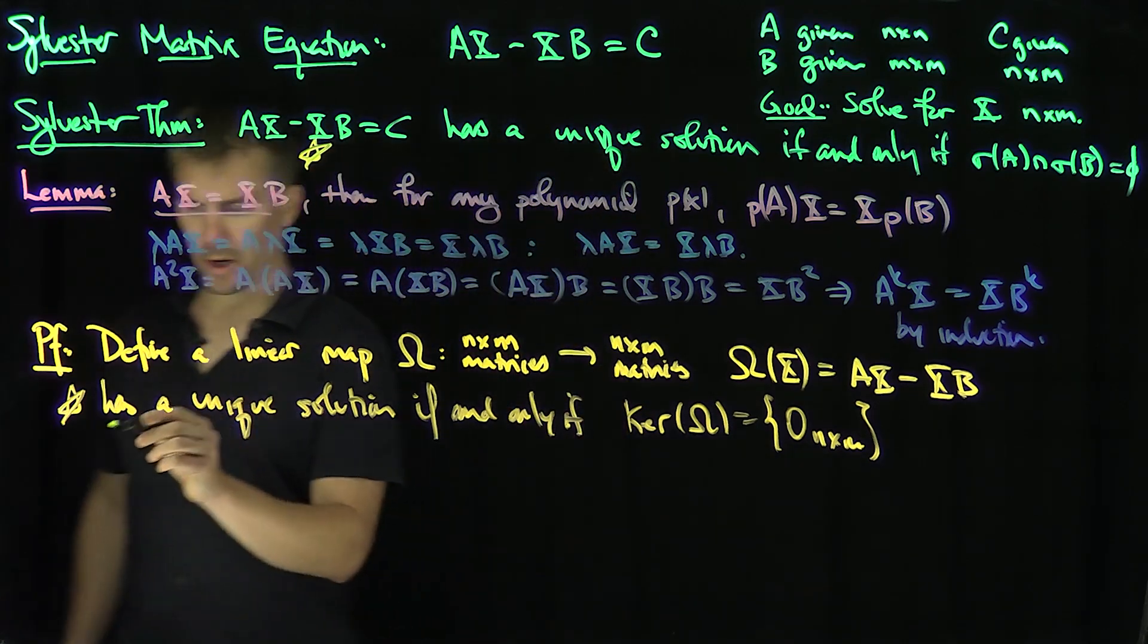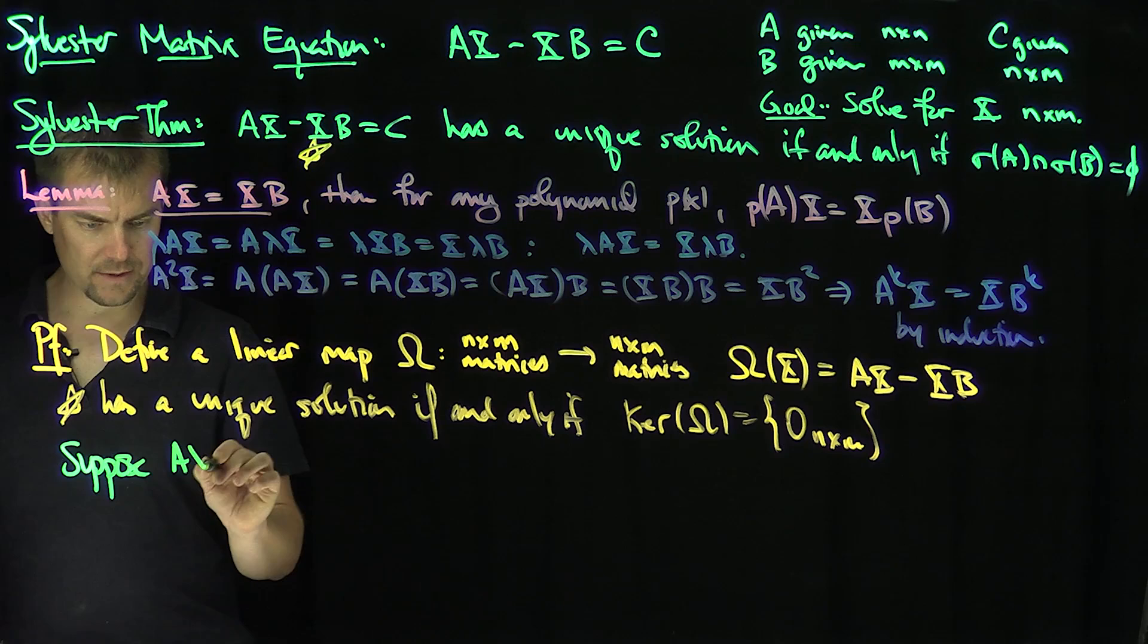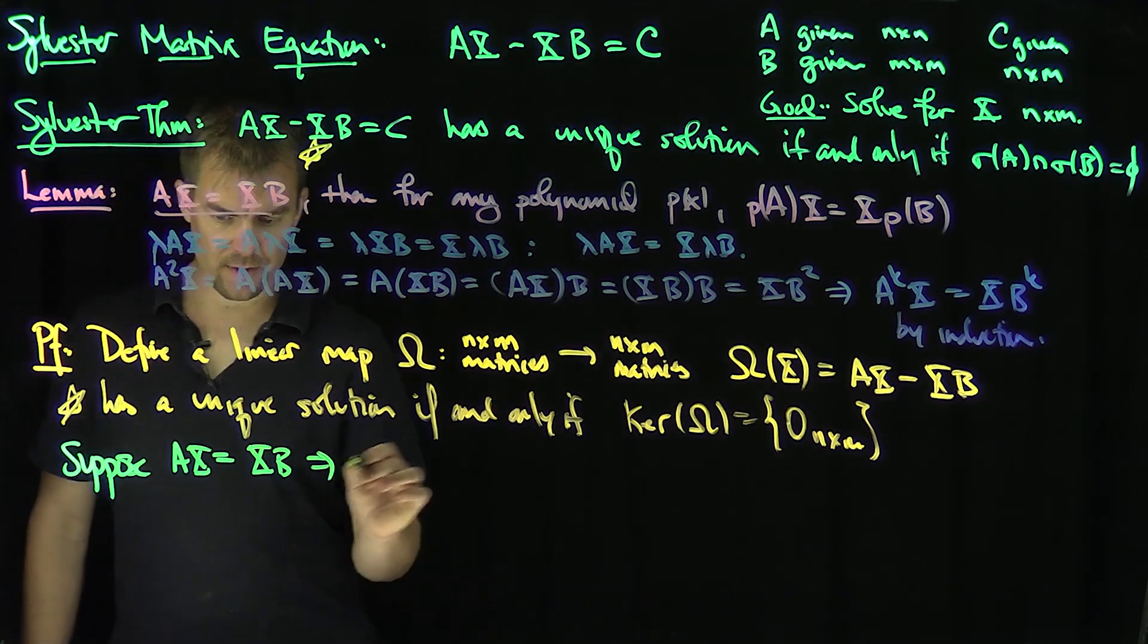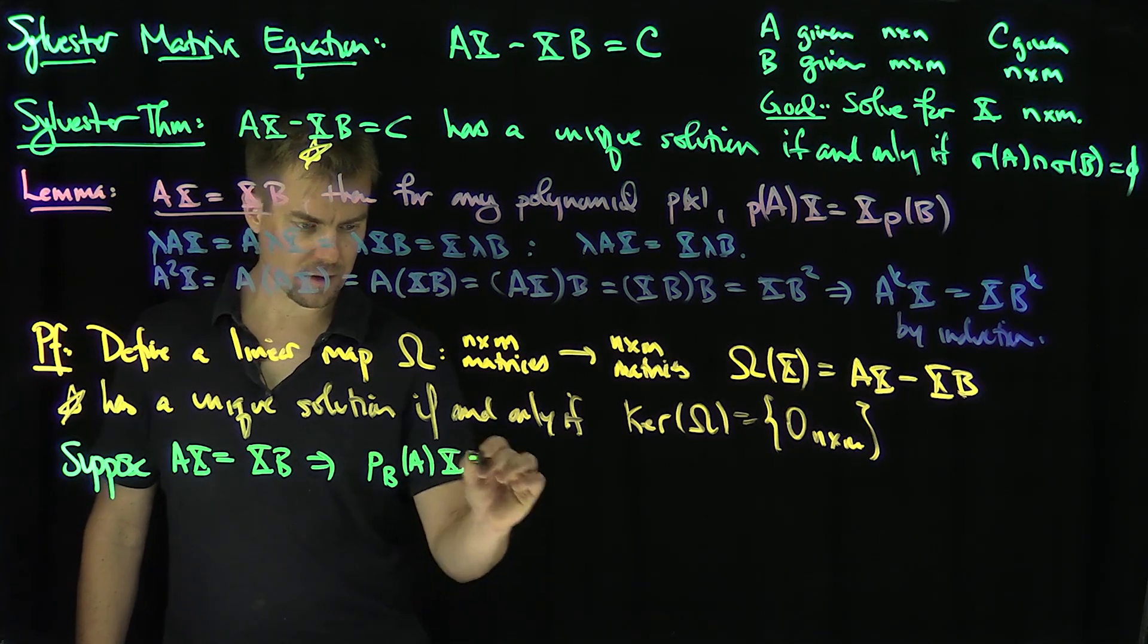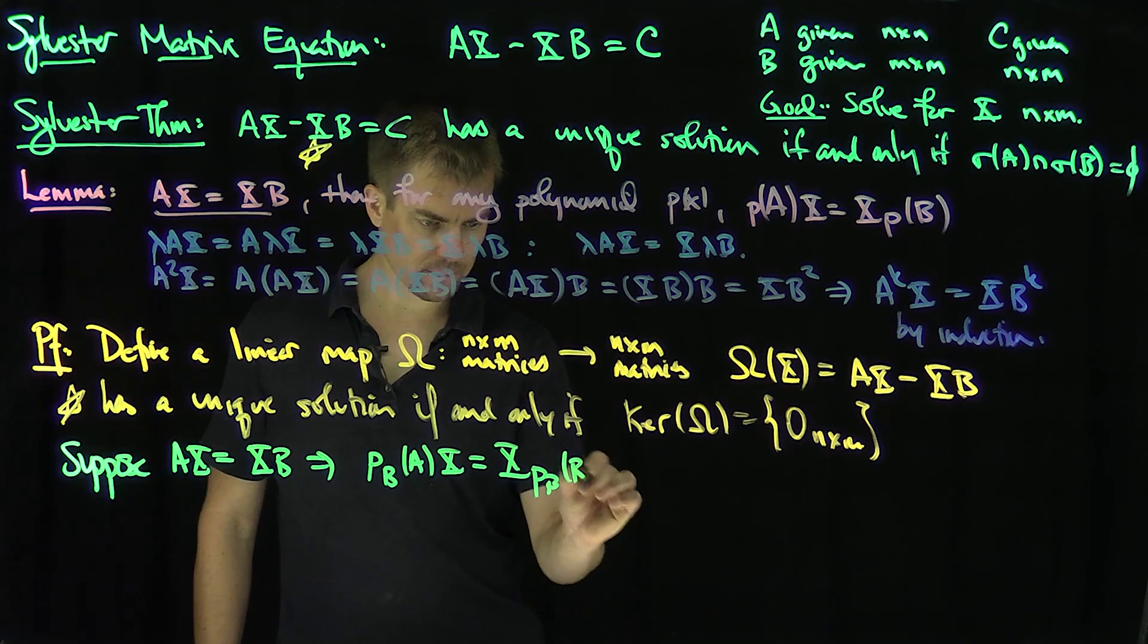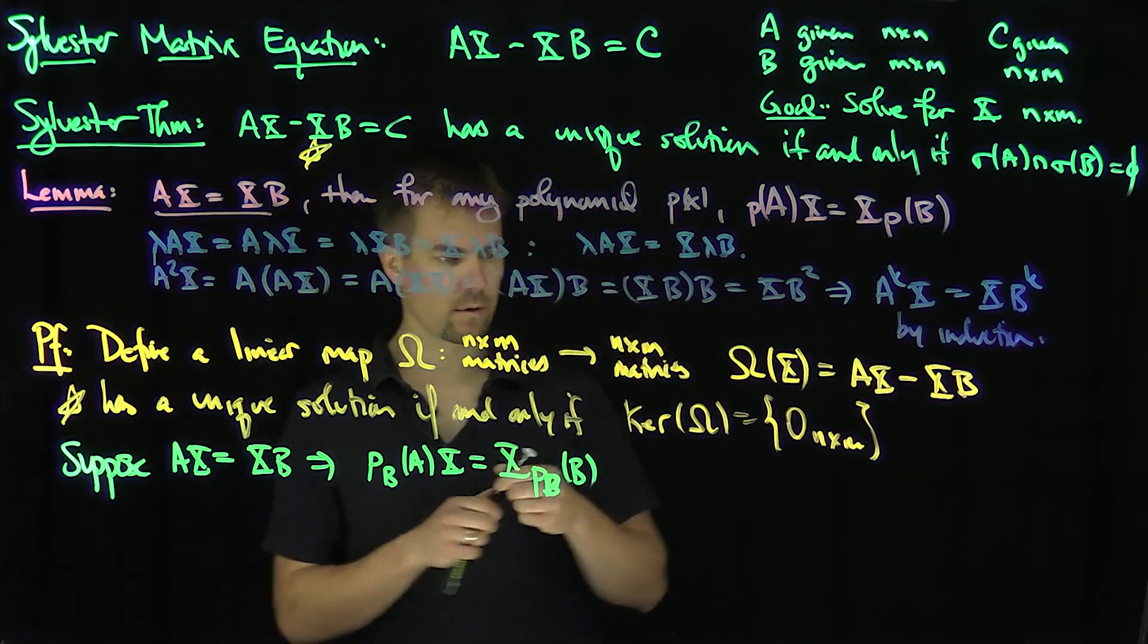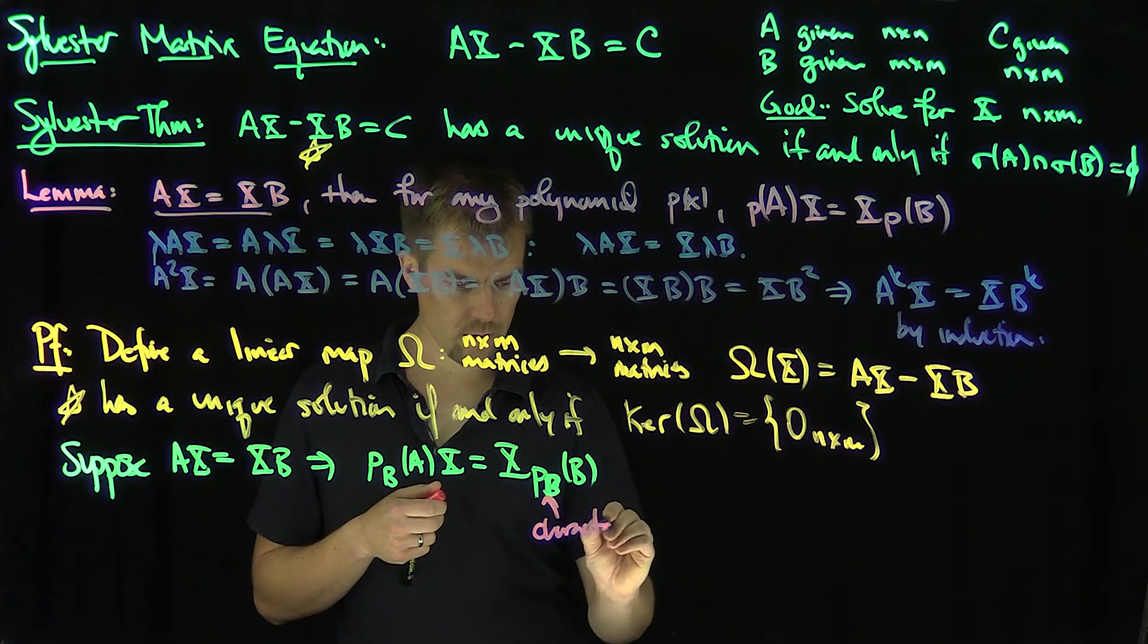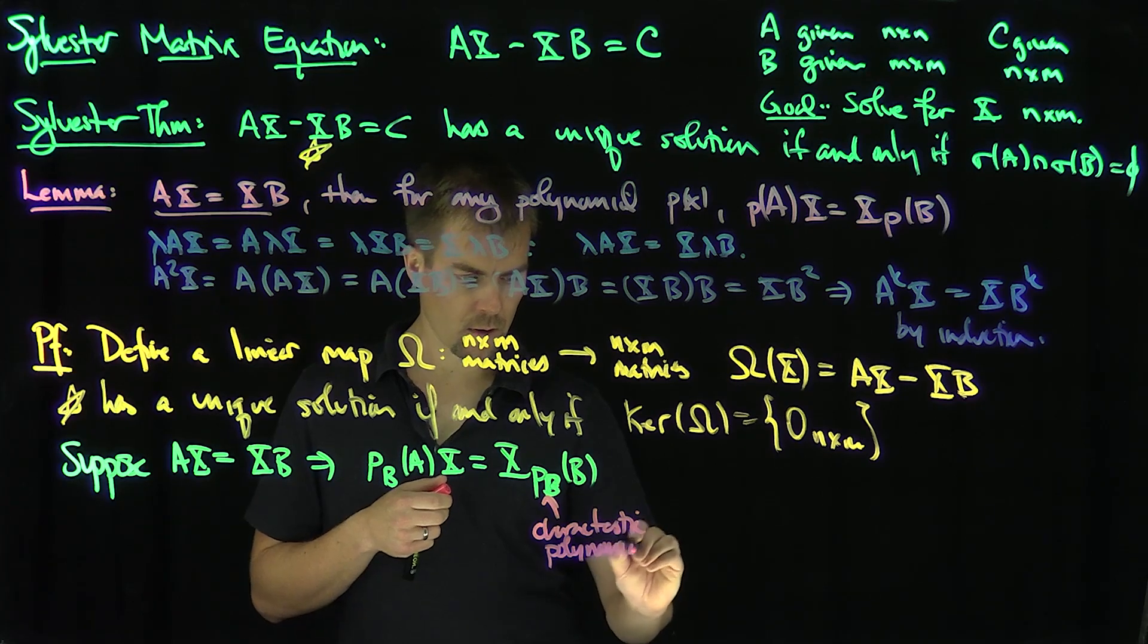Suppose AX equals XB. Then this implies p_B(A)X equals X p_B(B),